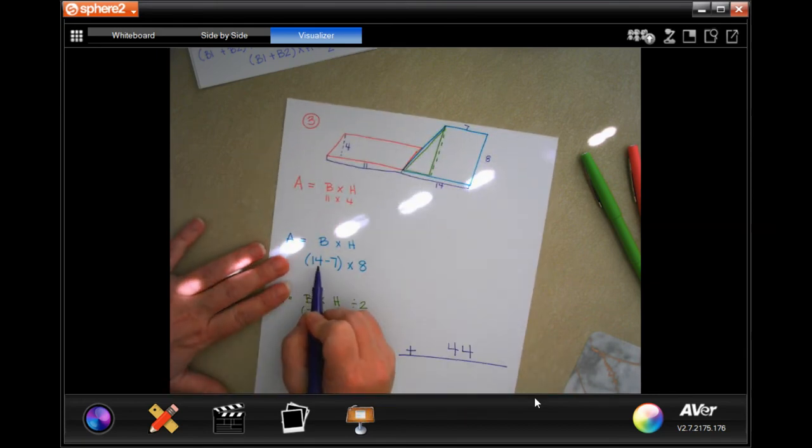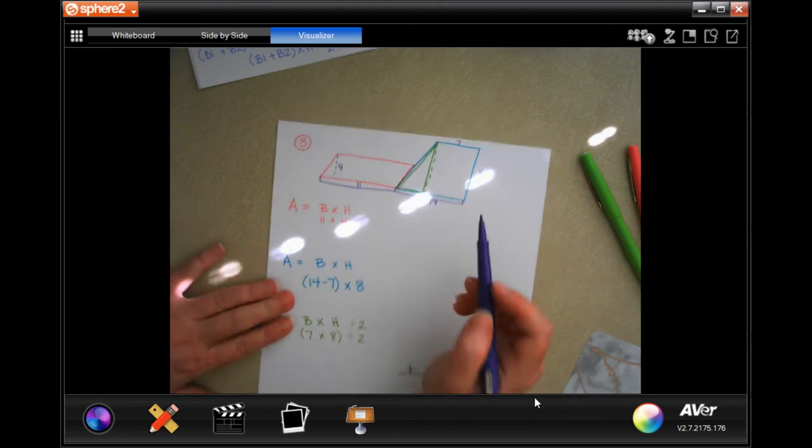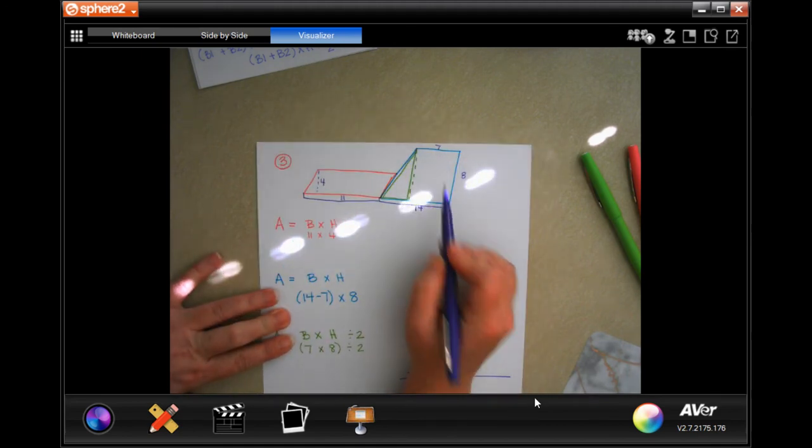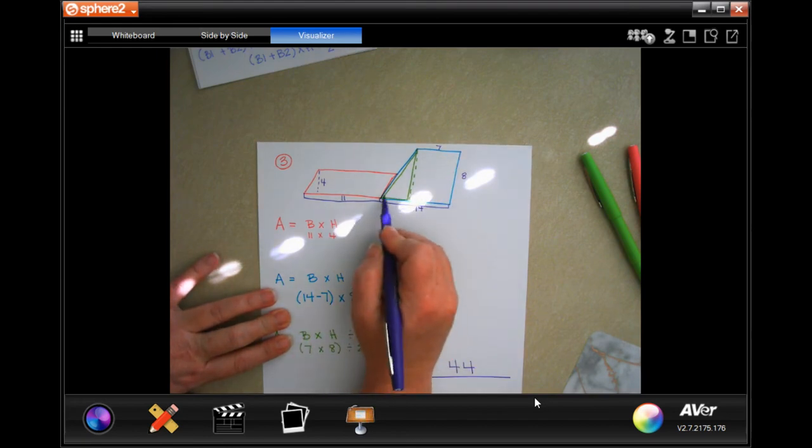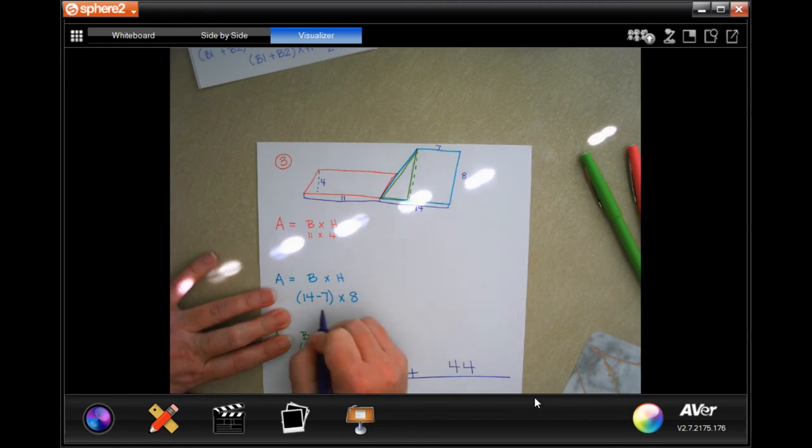Now, this is how I split it up. The square is only 7 across, so I did the 14, which is this whole thing right here, minus that 7, which gave me 7. Well, 7 times 8 is 56.